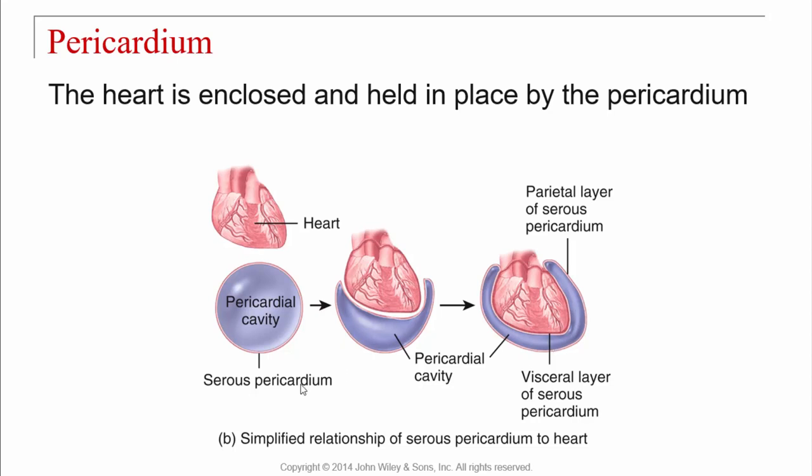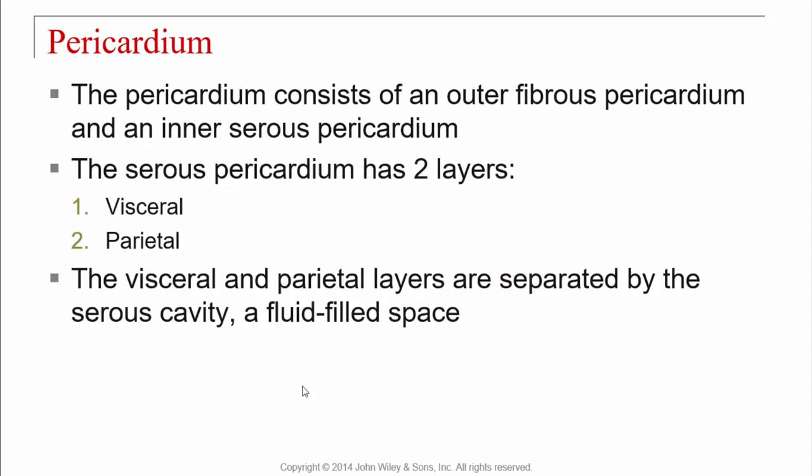We're talking about a serous pericardium because there's also another part called the fibrous pericardium. Altogether, the pericardium consists of an outer fibrous pericardium and an inner serous pericardium. The serous pericardium has two layers: the visceral layer up against the heart and the parietal layer on the perimeter. The visceral and parietal layers are separated by pericardial fluid. That fluid fills that space — unless you get bleeding or inflammation that puts excess fluid into the pericardial cavity.